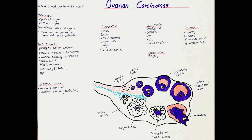A hematogenous spread is rather rare. The staging of ovarian carcinomas is done by the TNM classification. A stage 1 carcinoma is confined to the ovaries. A stage 2 carcinoma usually invades organs in the pelvis. A stage 3 carcinoma invades organs outside the pelvis or metastasizes via the lymphatic system. A stage 4 carcinoma includes the occurrence of distant metastasis.